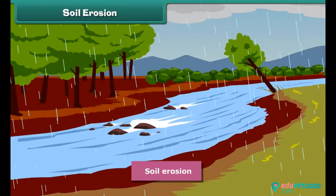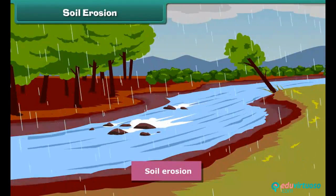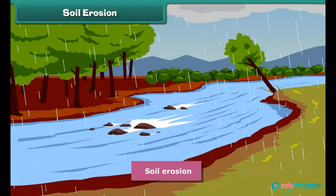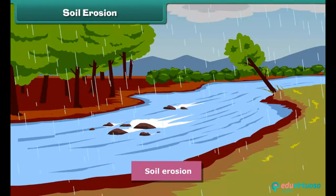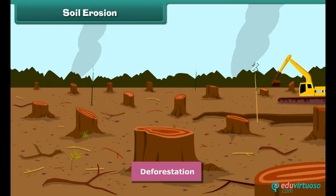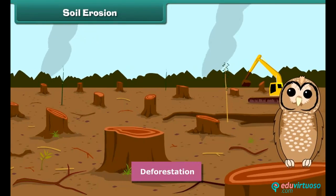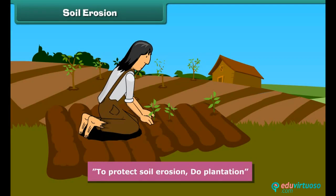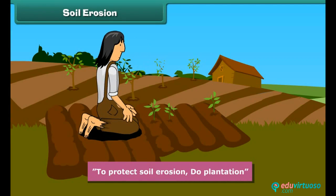Do you know what soil erosion is? Sometimes the soil is carried away by wind and water — this is called soil erosion. You will be surprised to know that cutting of trees also causes soil erosion. Soil erosion makes the soil infertile. We can protect against soil erosion by planting more and more trees.